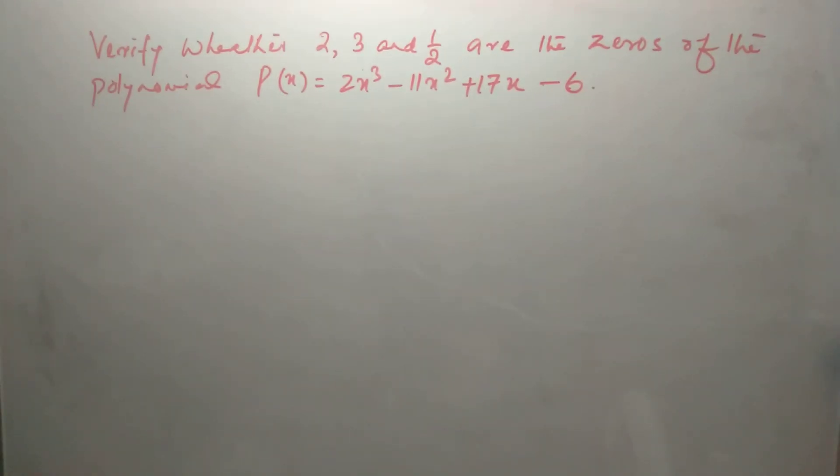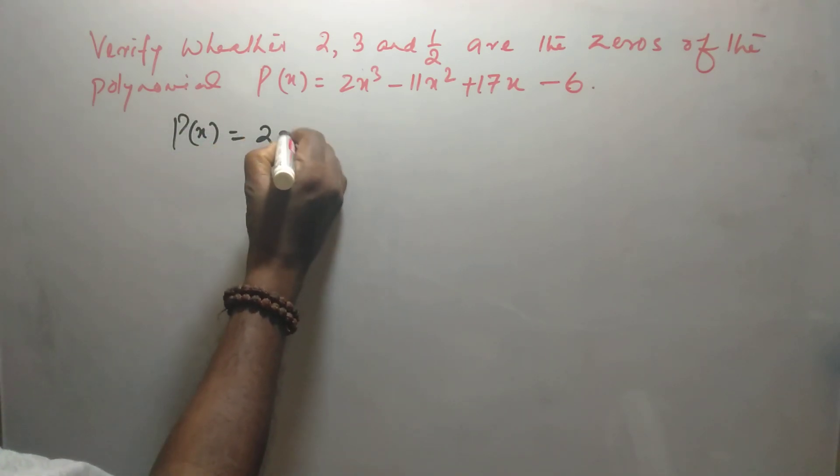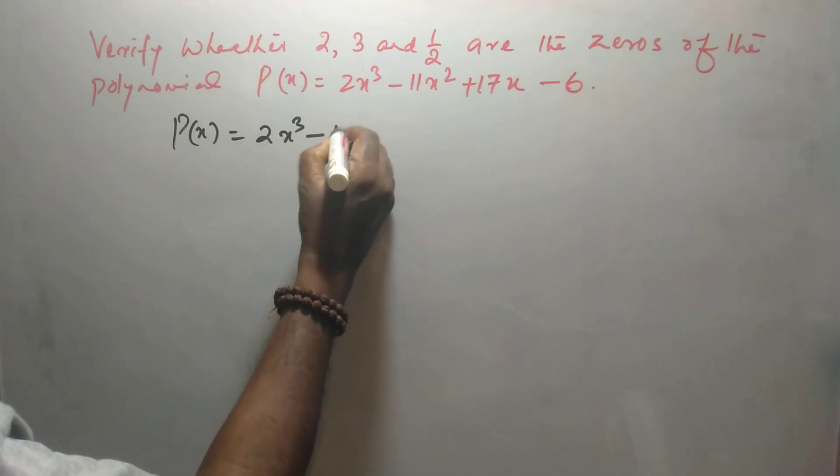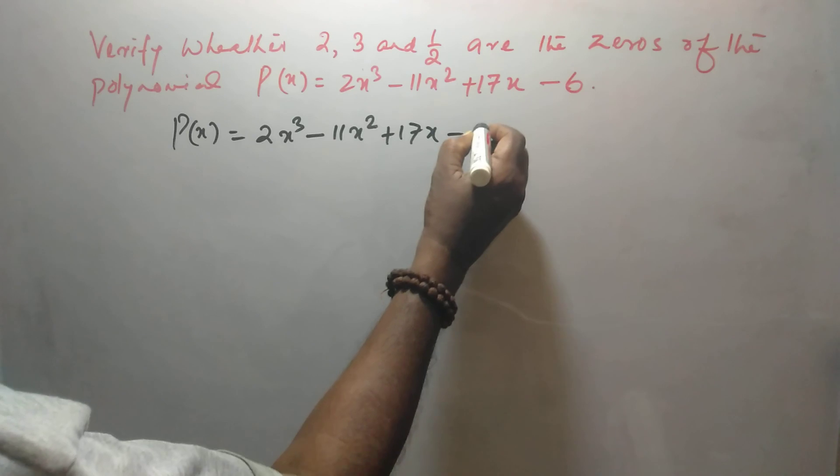Verify whether 2, 3 and half are the zeros of the polynomial P(x) = 2x³ - 11x² + 17x - 6. Now, P(x) = 2x³ - 11x² + 17x - 6.